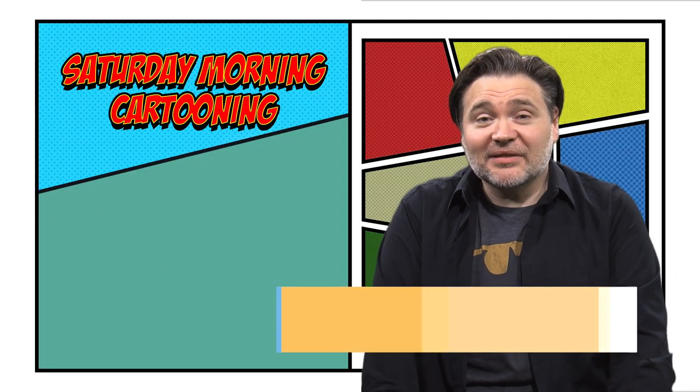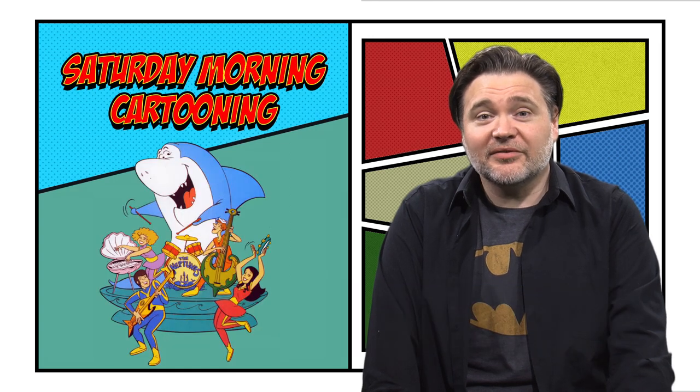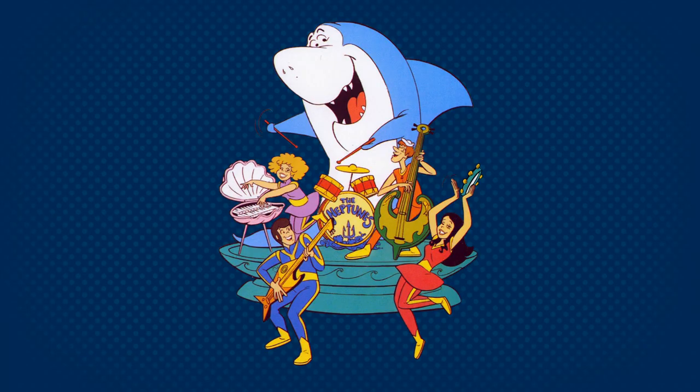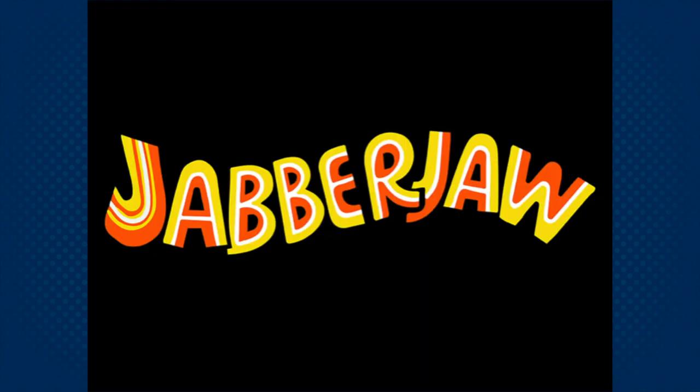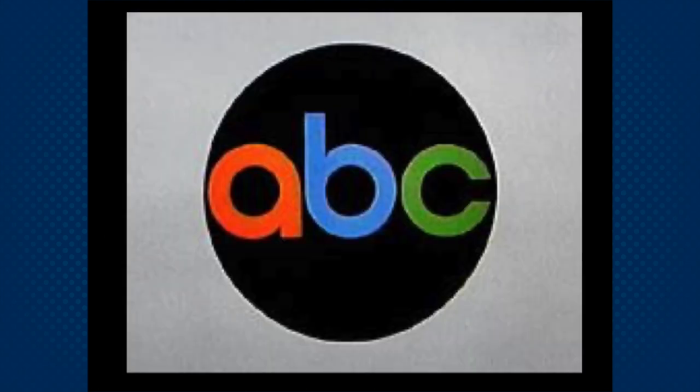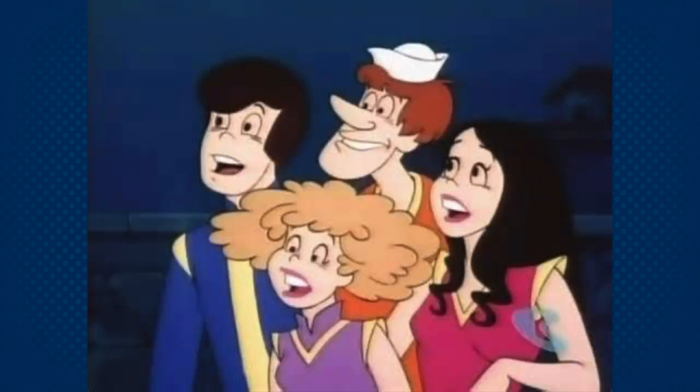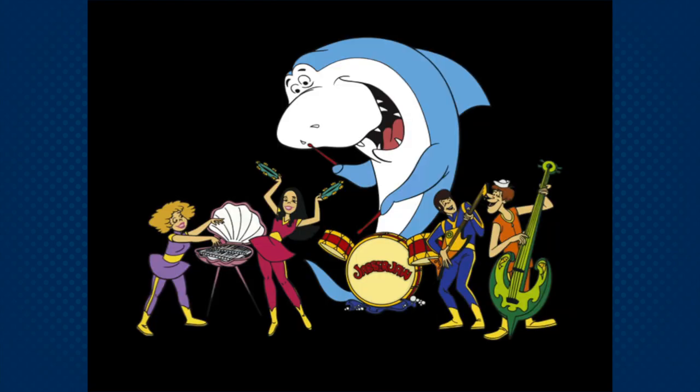Get ready for a blast from the past. Today we're learning about the 1970s classic Jabberjaw. Jabberjaw was an animated TV series that ran from 1976 to 1978 on the ABC network. It tells the story of Jabberjaw, a 15-foot great white shark who, along with his friends Biff, Shelly, Bubbles, and Clamhead, are in a band called the Neptunes.